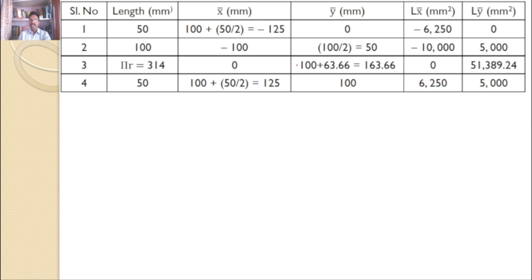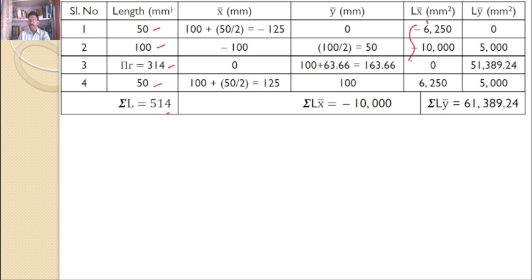This is the table of what we discussed so far. Once we have the table, I can calculate ΣL: 50 plus 100 plus 314 plus 50, total 514. I can calculate ΣLx-bar, the sum of all these values, which equals -10,000. And ΣLy-bar, the sum of all these values, equals 61,389.